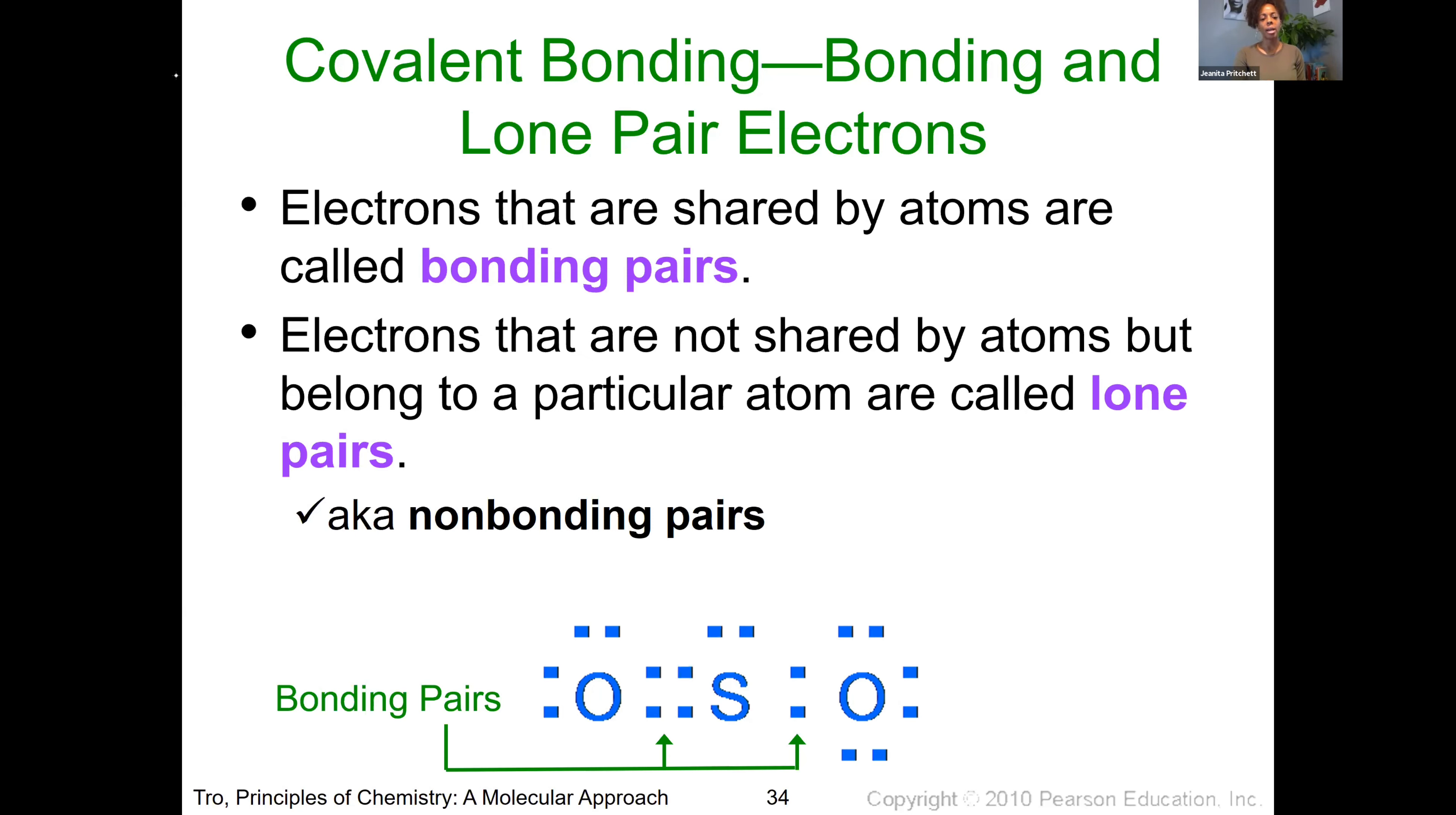And so if we looked at this diagram here, remember that word pair, pair means two. So a bonding pair or a lone pair is indicative that there's two electrons involved. And so on this atom here, we can see that between the sulfur and the oxygen, there are these electrons here that look to be between the two of them. They're not isolated to one or the other. And so those are what we're referencing as our bonding pairs.